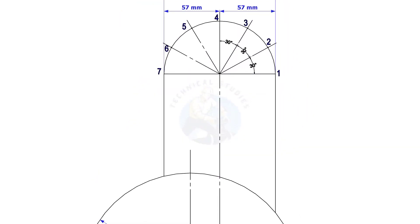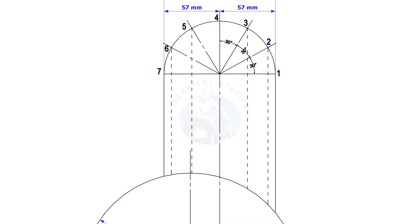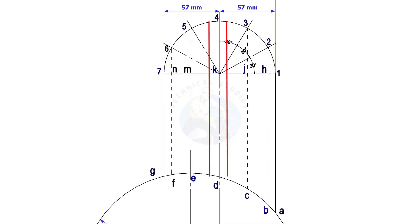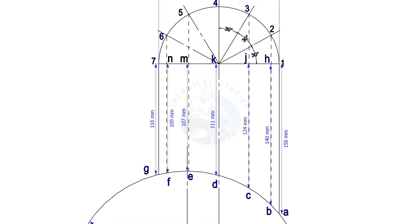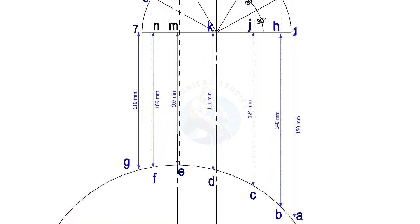Draw perpendicular lines from the intersection points to the header, as shown. These lines must be parallel to the branch center line. Note down the distances G7, Fn, etc.